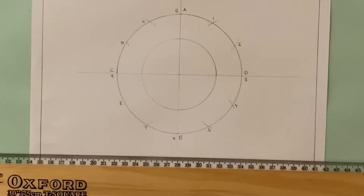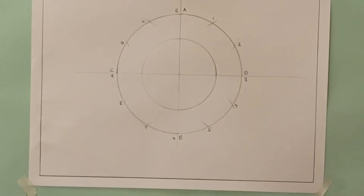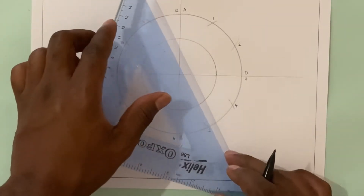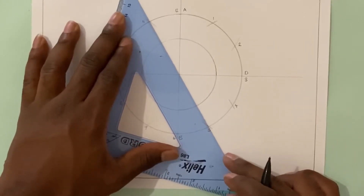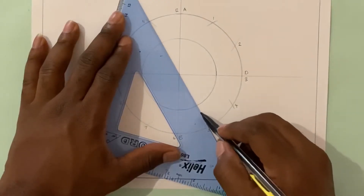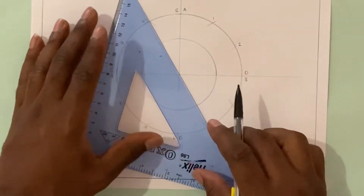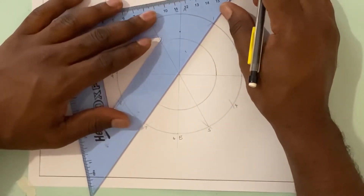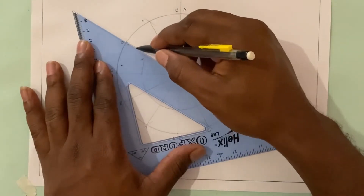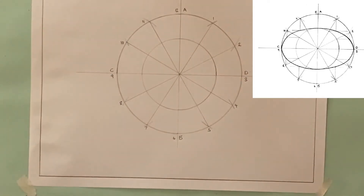Now I'm going to join my points to divide my circle into 12 equal parts. Using my set square, I'll line up at point 11 running through the center to point 5, then do the same from point 1 running through to point 7. Now we have all our points and the circle is divided into 12 equal parts.